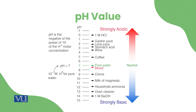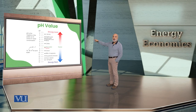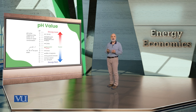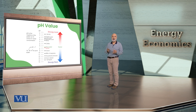As hydrogen's negative power increases — from 8, 9, 10, 11, 12, 13, 14 — pH 14 is a 100% complete molar solution that is fully basic. So this is the pH scale.